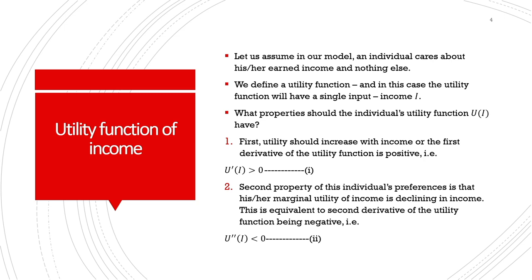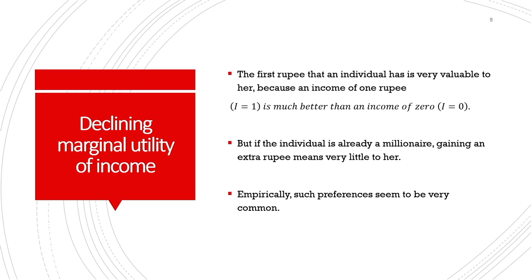This is not hard to understand from real life examples. The first rupee that an individual has is very valuable — an income of one rupee is always better than no income. But if the individual is already a millionaire, gaining an extra rupee means very little. Such preferences are empirically common. Individuals who are richer have declining marginal utility of income, while for poorer individuals, the utility derived from an additional unit of income is much higher compared to a richer individual.